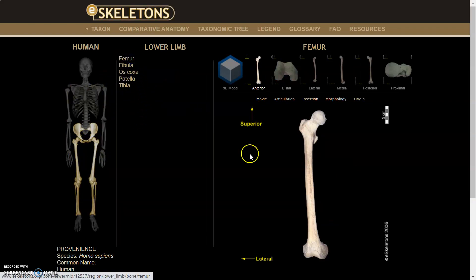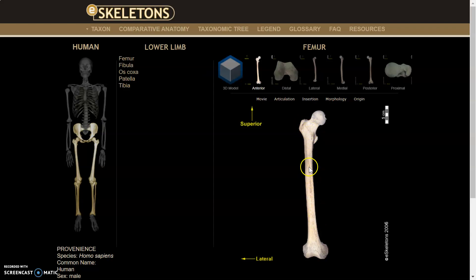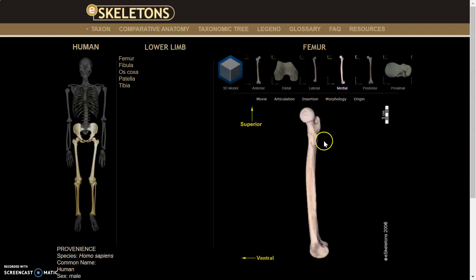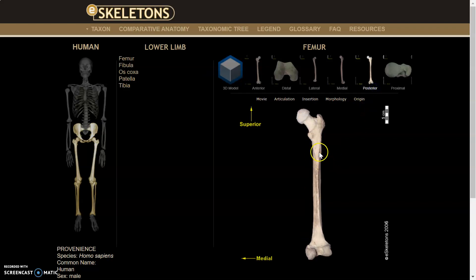Let's do the femur — this is the long bone of the lower leg. We have the femur here, very recognizable. This is an anterior view, basically a front view. This is a lateral, or side view. Medial is an inside view. And then the posterior, which is basically behind the leg. This will help you with orientation but also with the primary features I want you to know to identify bones.